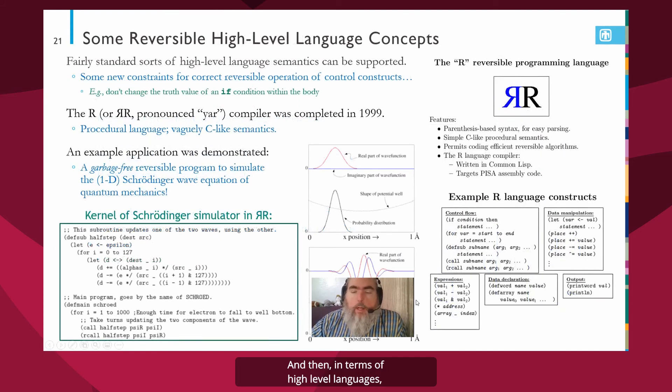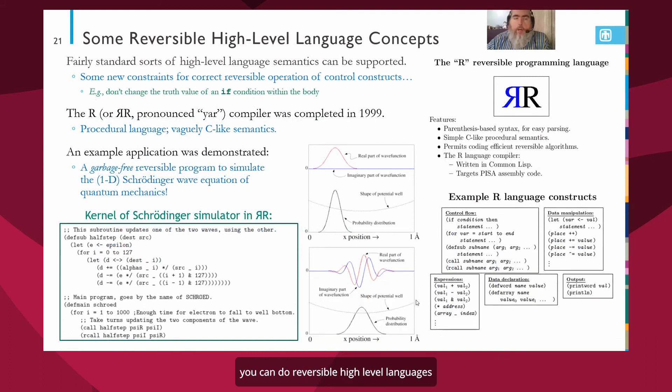And then in terms of high level languages, these are also, you can do reversible high level languages without too many departures from conventional high level languages. There are a few extra constraints like in my language R or you might call it YAR if you write it out this way, if this is a Russian Cyrillic YAR character, one condition was you shouldn't change the if condition within the body of the if because we need that constraint to make the paired branches work properly. And so there's a few changes like that but other than that its semantics is mostly the same as a fairly standard procedural high level language and I did a demonstration that you could implement a complete simulation of the 1D Schrodinger wave equation in a very concise block of R code or YAR code and I tested this and produced the exact right results and you could reverse it exactly and so that was all very nice.